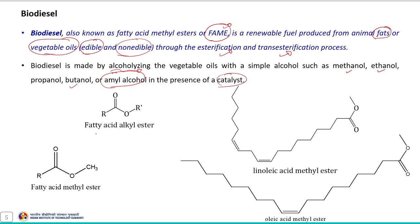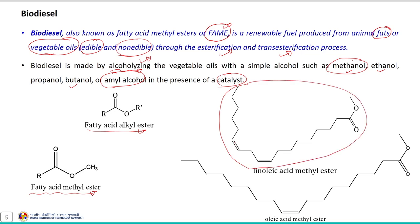This structure represents the fatty acid alkyl ester structure. If methanol is used as an alcoholizing agent then it produces fatty acid methyl ester as a product. This represents the structure of linoleic acid methyl ester containing two double bonds, and this represents the oleic acid methyl ester with a single double bond, also termed as the unsaturation contained in the given sample.